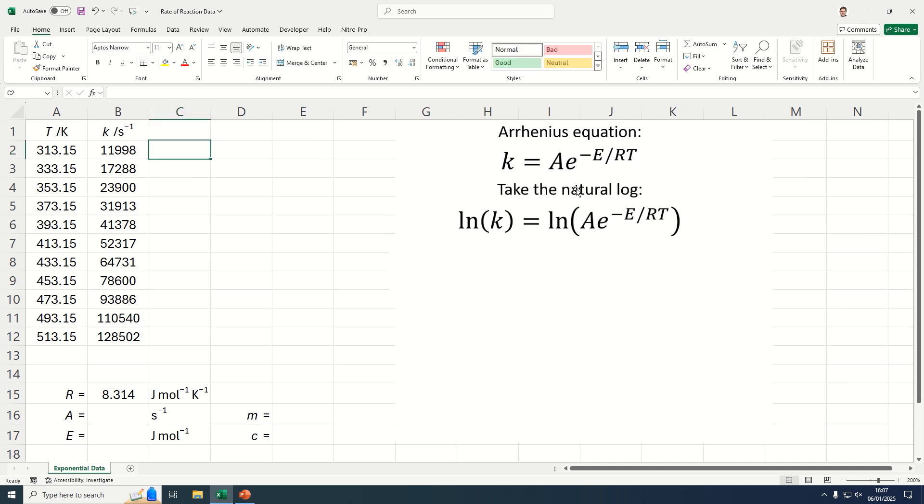So if we take the natural log of both sides we can simplify this using the properties of logs. So first of all we can break apart the two terms that are multiplied together and just add them up.